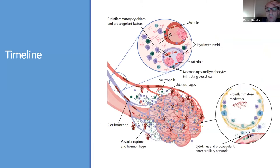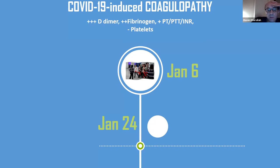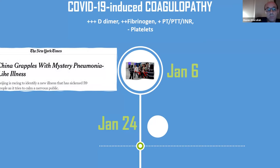What I will try to do is first go through the timeline — how we learned about this disease and how the evidence evolved — then put some strategies, then open it up for the other panelists, Dr. Basil and Dr. Fouad, to share their experience. We started in late December and on January 6th, the New York Times reported that China was grappling with a mystery pneumonia-like illness.